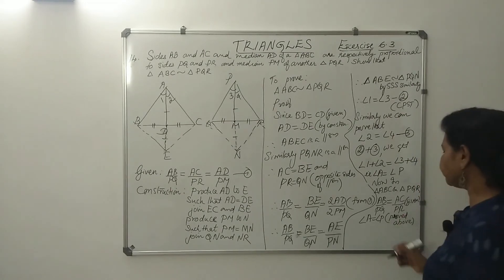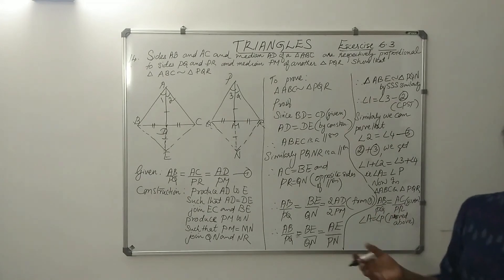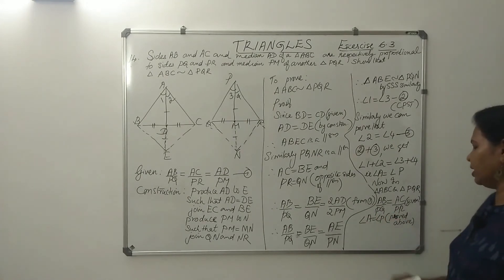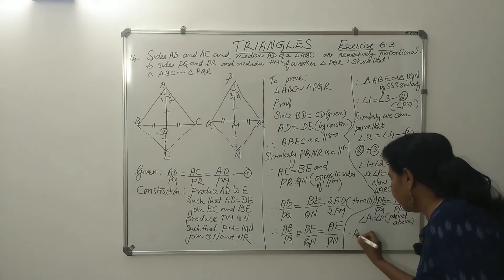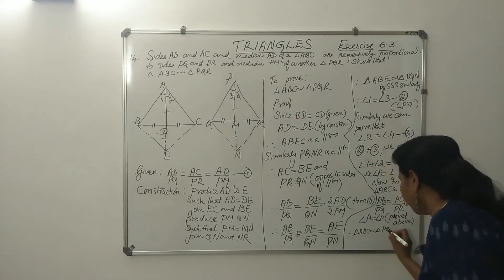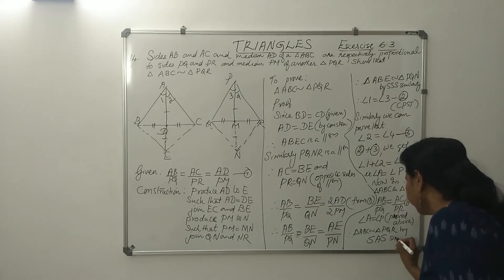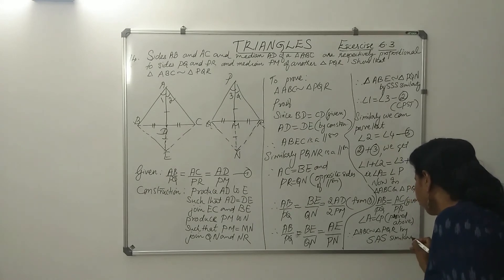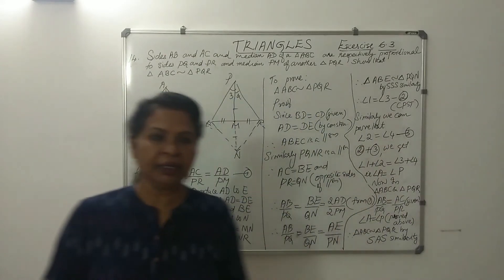Two sides proportional and the included angles are equal. Therefore triangle ABC is similar to triangle PQR by SAS similarity.